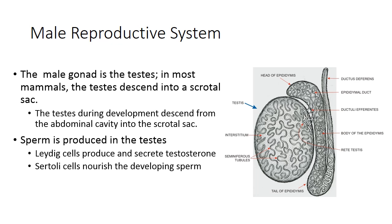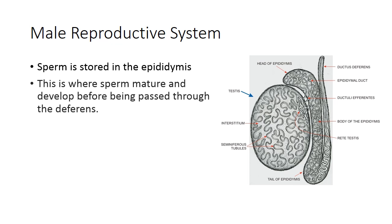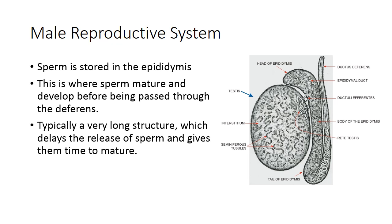Within the testes, Leydig cells produce and secrete testosterone, and Sertoli cells nourish the developing sperm. The efferent ductules carry sperm to the epididymis, where sperm is stored and matures. The epididymis is a very long portion of the reproductive tract that delays the release of sperm and gives it time to mature before it passes through the vas deferens — also called the ductus deferens.